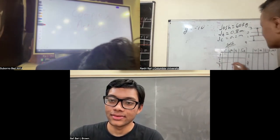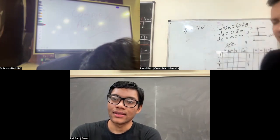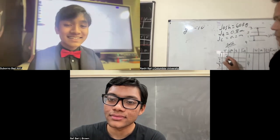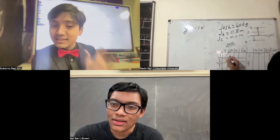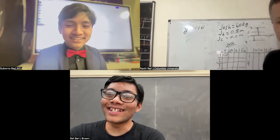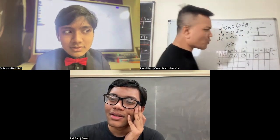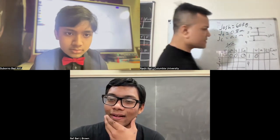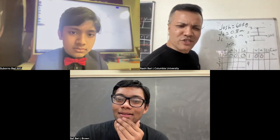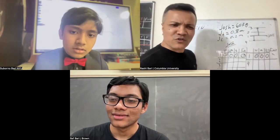Now I'm going to ask questions. What is Josh's velocity at location one? Zero. What is Josh's acceleration at location one? Zero. What is Josh's time at location one? Zero. What is Josh's net force at location one? Zero. What is Art's velocity at location one? Zero. Art's acceleration? Zero. Art's time? Zero. Art's net force? Zero.